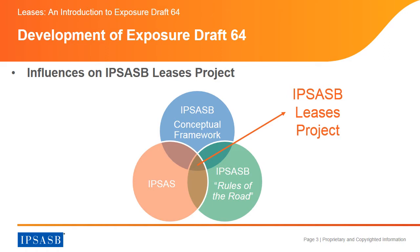And whether applying the requirements of the IASB document would require undue cost or effort. This takes us to the second and third influences. The process requires the IPSASB to take its decisions in the context of consistency with the IPSASB's conceptual framework for general purpose financial reporting by public sector entities, and internal consistency with existing IPSAS. Consistency with the statistical basis of accounting is also required. However, as IPSAS 13 is aligned with IAS 17 rather than with GFS, and IFRS 16 was published after the most recent GFS manuals, the IPSASB decided to converge with IFRS 16 instead of aligning with GFS.